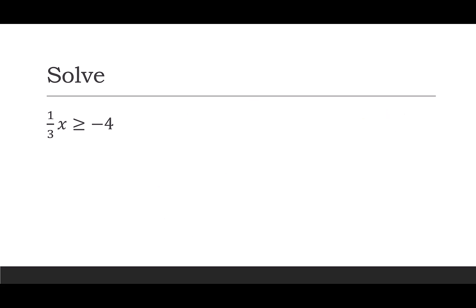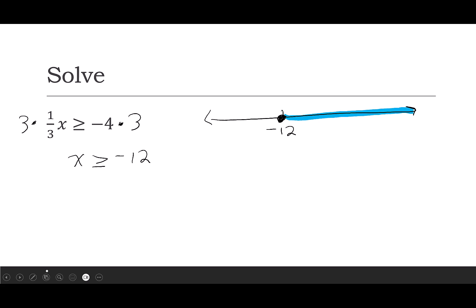When I have a fraction, I'm going to clear the fraction to make things easier. You could divide by the fraction but it's easier to multiply both sides by 3. So I have a 3 on the left and a 3 on the right. Since 3 is positive I'm not flipping my inequality. The left side simplifies to x, and the right side is greater than or equal to negative 12. On my number line I place negative 12, put a closed dot, and shade to the right. In interval notation the closed dot is a square bracket, the smallest solution is negative 12, and it goes to positive infinity with a parenthesis.